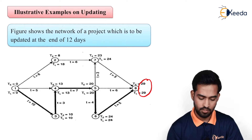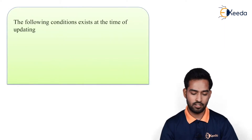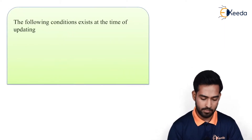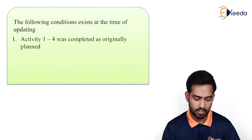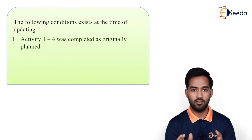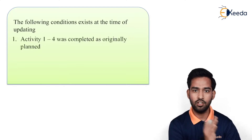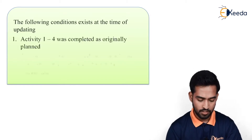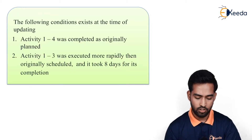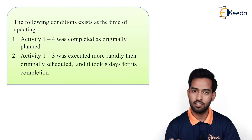How is it done? The first step: the following conditions apply at the time of updating. Activity 1-4 was completed as originally planned because it finishes well before the 12-day mark. Activity 1-3 was completed more rapidly than originally scheduled and it took 8 days for its completion. Activity 3-4 commenced following the completion of activity 1-3 and was completed at the end of the 11th day.